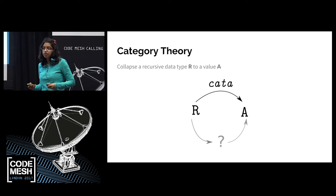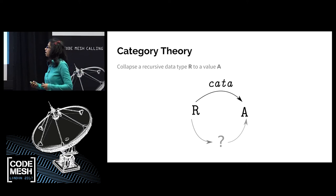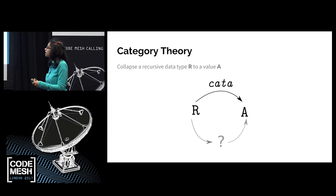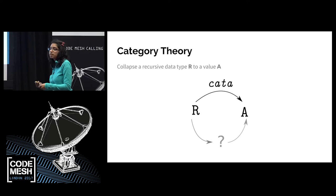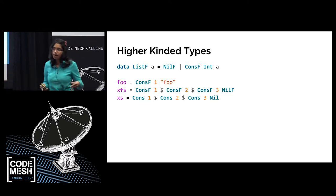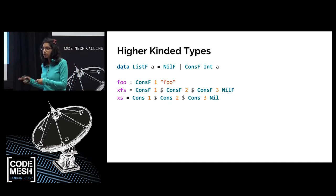Let's pose our problem in category theory. I've said I want to take a general recursive structure and collapse it into a single value. The only tools I have are composition. The way I need to do that is to find some arrow that goes from recursive type R to another type A, and the only way I can do that is through composition — I need to find some other stuff to compose to make this function.